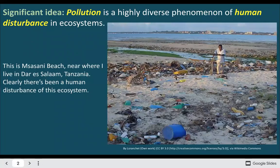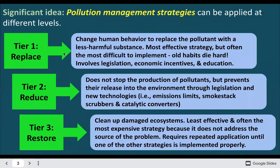Humans and pollution. Pollution is a really diverse phenomena of human disturbance in ecosystems. We'll get to a specific definition shortly. We have three different management strategies to deal with pollution: we can change the human behavior that produces the pollutant, we could try to reduce the release of the pollutant at the source — like cleaning smokestacks or catalytic converters making car emissions cleaner — or we could try to remove the pollutant from the ecosystem once it's already been emitted and try to restore.